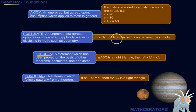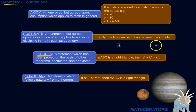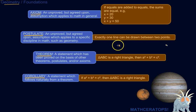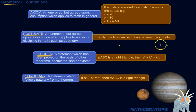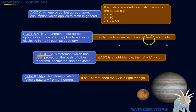Here's a geometric postulate: exactly one line can be drawn between two points. We've got a point here and a point here — there's exactly one line that I can draw between them. Can I prove that? No. But can we all agree that that's true and then move forward? Yeah.